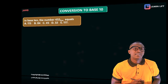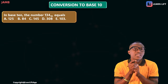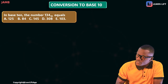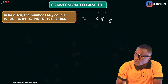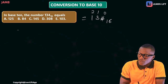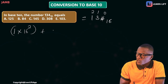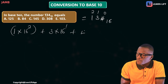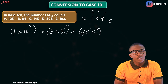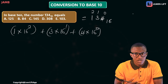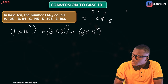Let's take the last question for this batch: in base 10, what is 134 base 16? This has digits 1, 3, 4 in base 16. Positions from the right are 0, 1, 2. So we write: 1 times 16 raised to power 2, plus 3 times 16 raised to power 1, plus 4 times 16 raised to power 0. We need to compute 16 times 16.